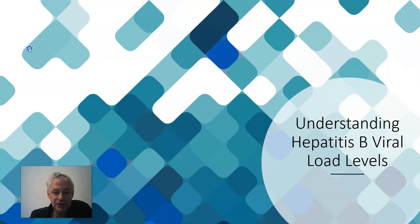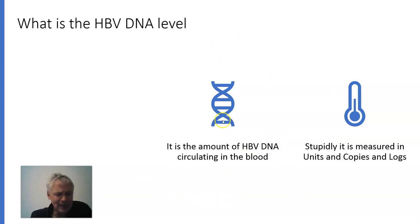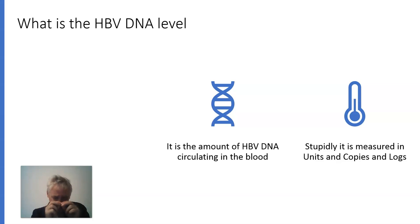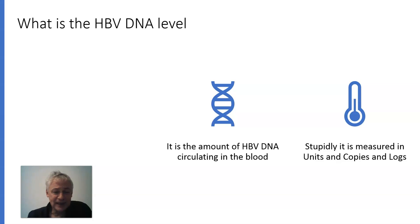Let's talk about hepatitis B viral loads. What is the HBV DNA level? Basically, it's the amount of HBV DNA circulating in the blood. We measure it in international units per milliliter of blood — you'll often see IU/mL. Unfortunately, doctors measure it in units sometimes, in copies sometimes, and in logs sometimes, giving patients all these chaotic different ways of counting how much virus is in the bloodstream.